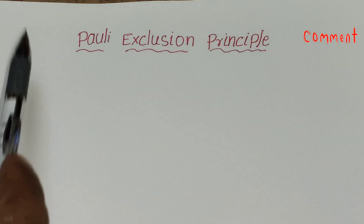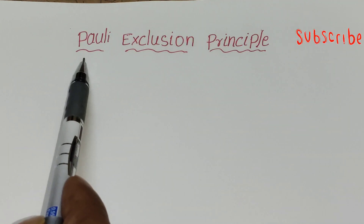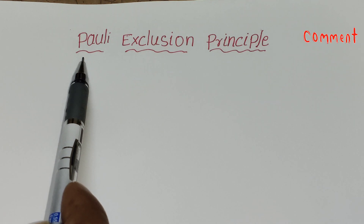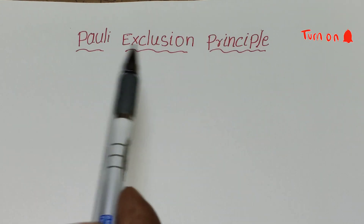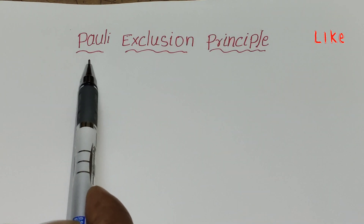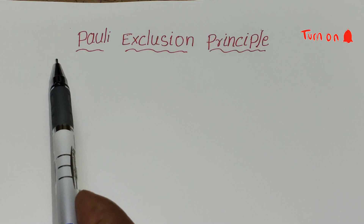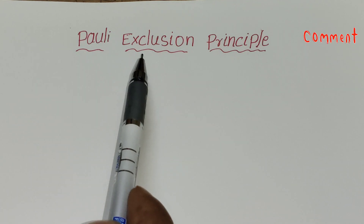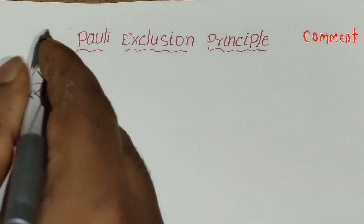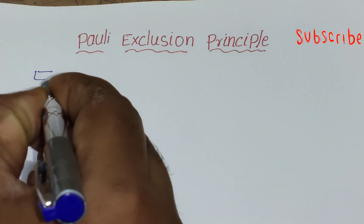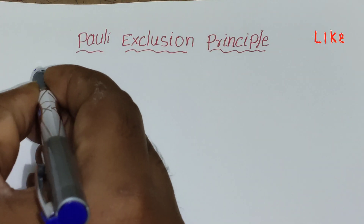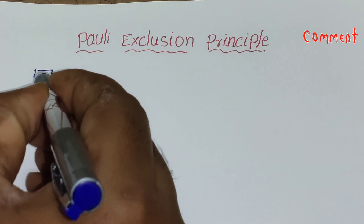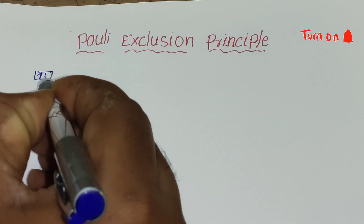Hi students, today in this video I will explain one of the important rules for writing electronic configuration, that is the Pauli's Exclusion Principle. This concept is useful for both 10th and 11th class students. So what is the Pauli's Exclusion Principle? It mainly explains how electrons are occupied into orbitals, where the maximum capacity of an orbital is only two electrons.